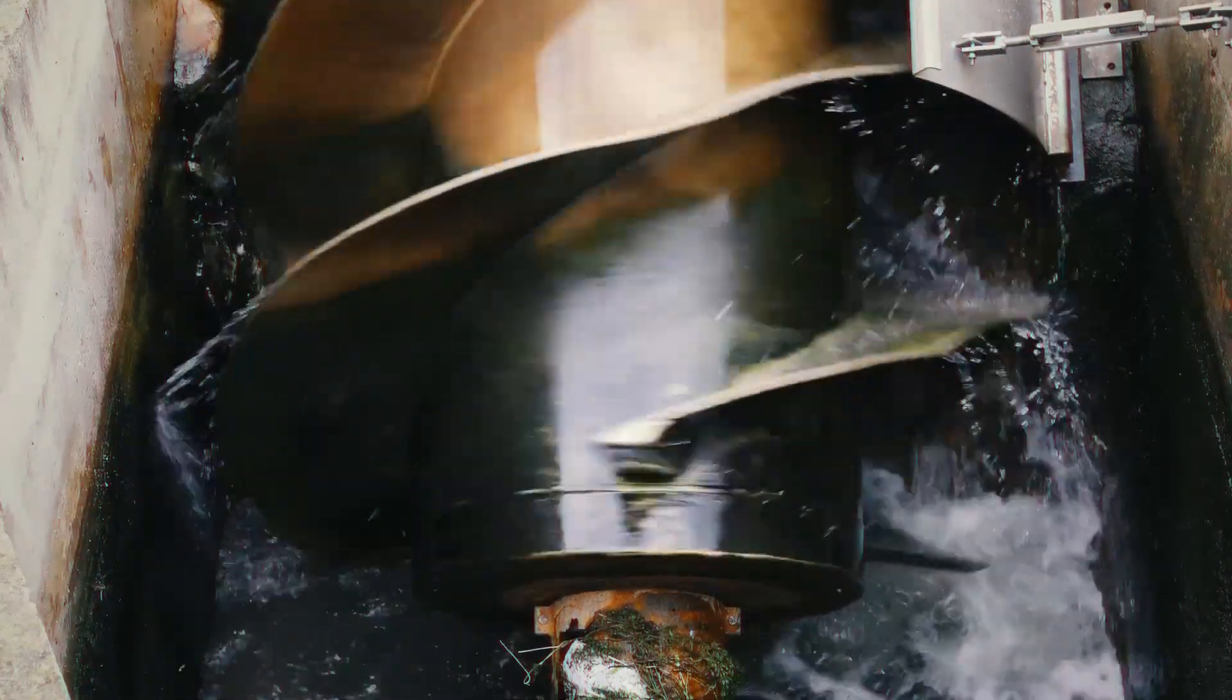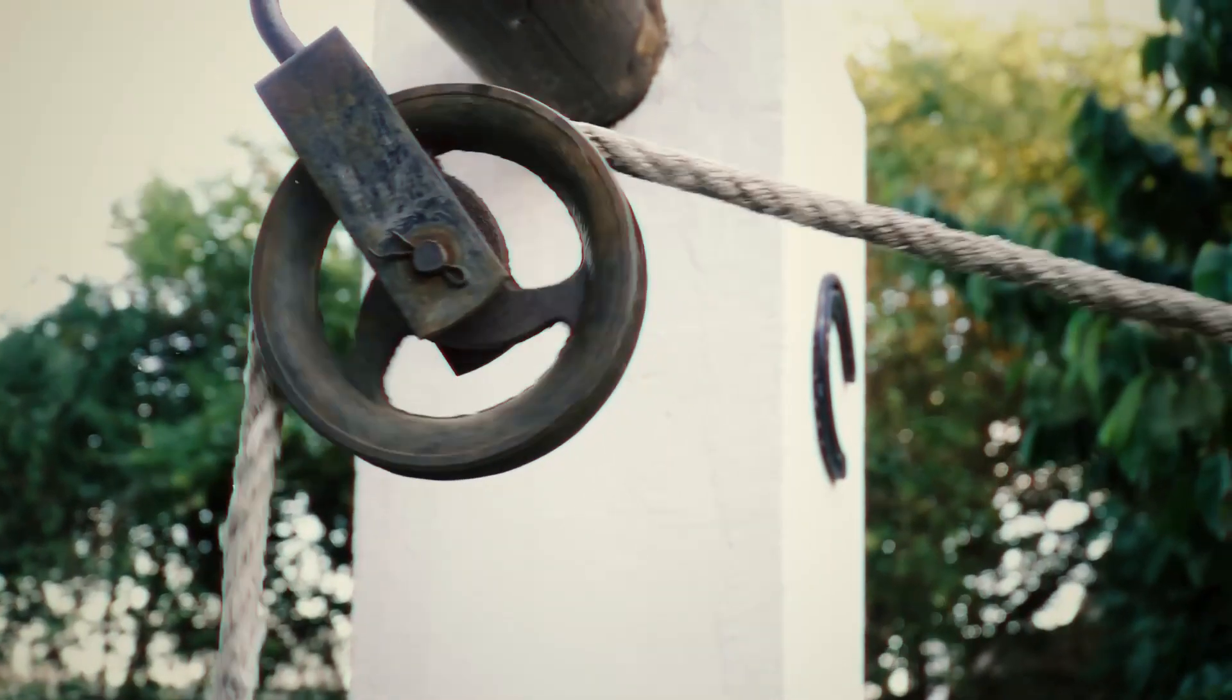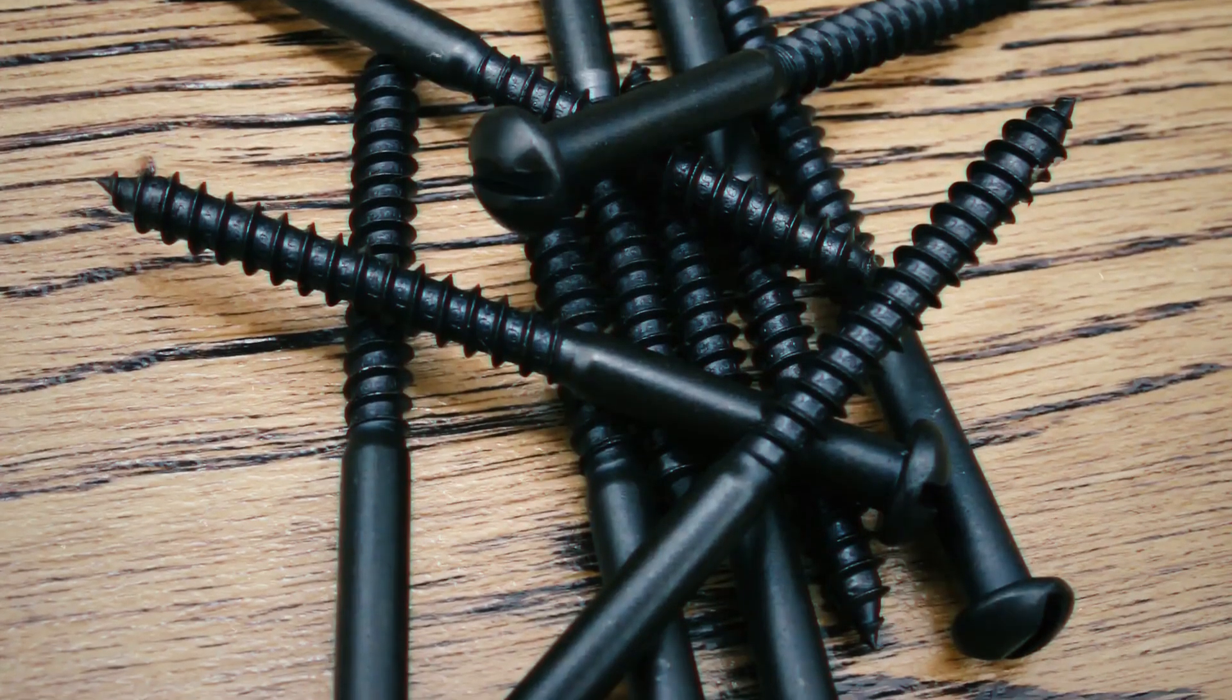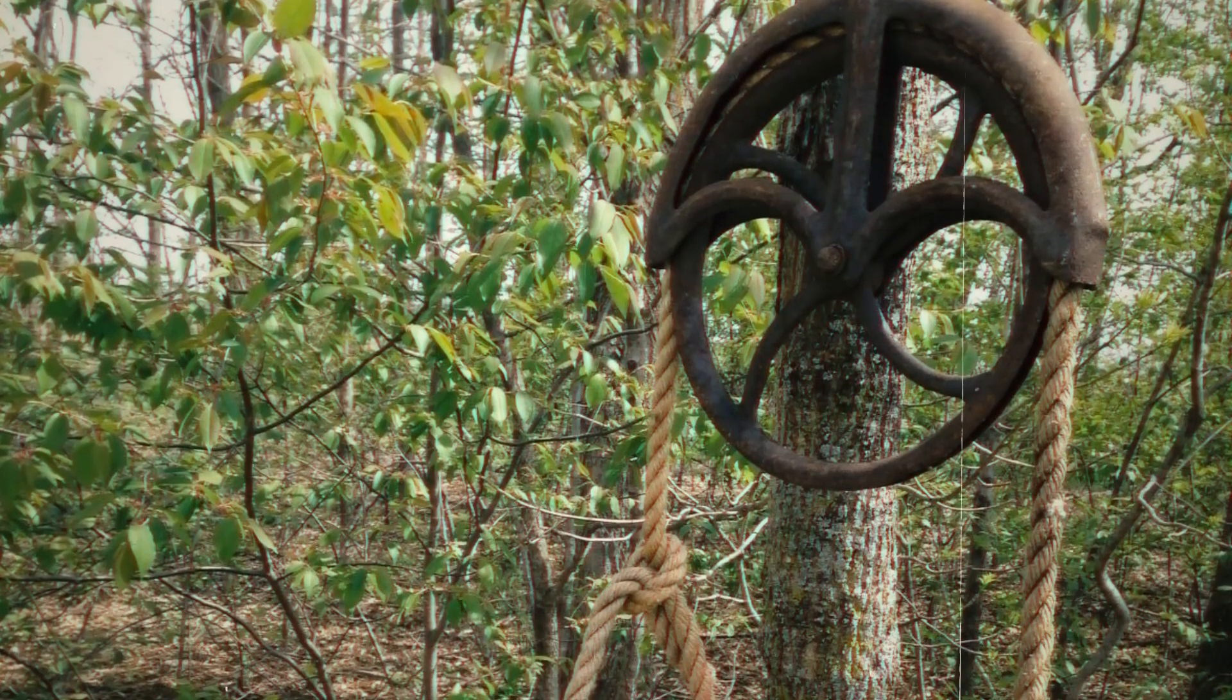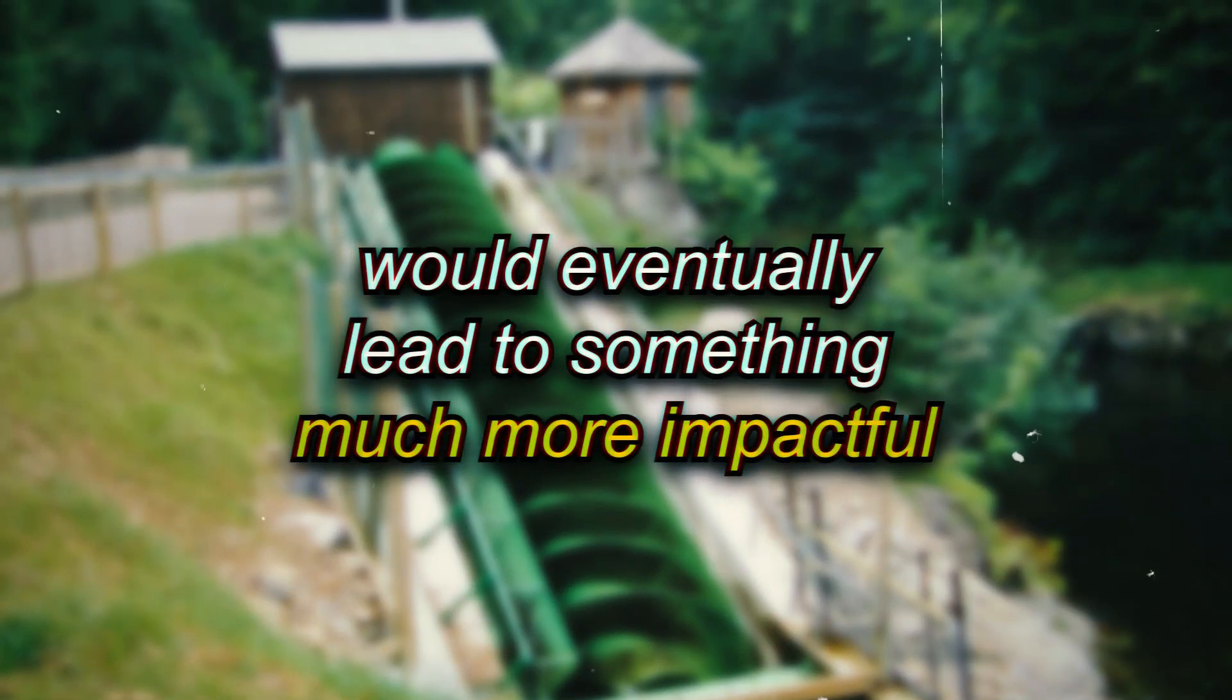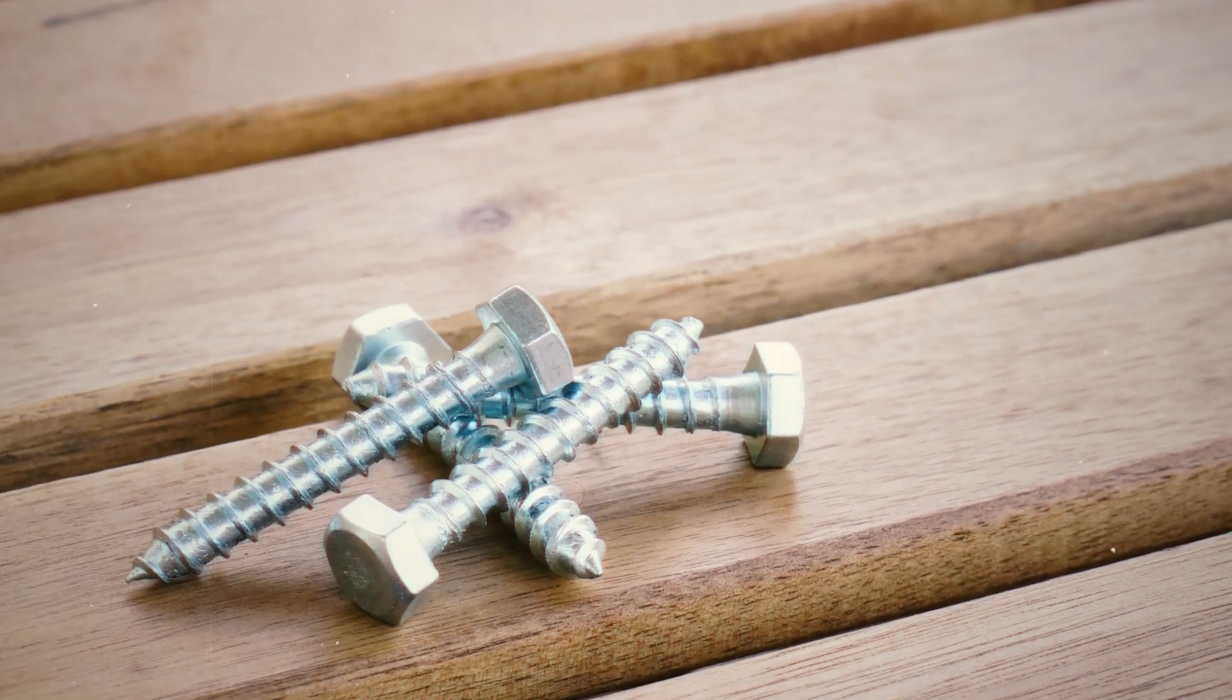Long before the Archimedean screw, the Babylonians and Egyptians used basic ideas about force and motion. They used simple machines like ramps and pulleys to lift heavy things and manage irrigation. While they didn't use screws as we know them, these early tools laid the foundation for later inventions. The idea that twisting motion could make hard work easier was key and would eventually lead to something much more impactful. These early experiments were the stepping stones to what would become one of the most useful tools in history.